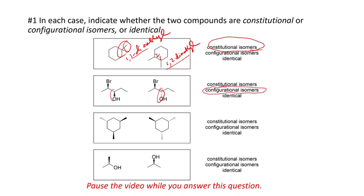Now, what do you think about this third one? We have three methyl groups. It's a 1,3,5 trimethyl. So, it looks like they're either configurational isomers or identical. Well, it looks like we've got a reversal, don't we? Are these enantiomers? Are these mirror images?